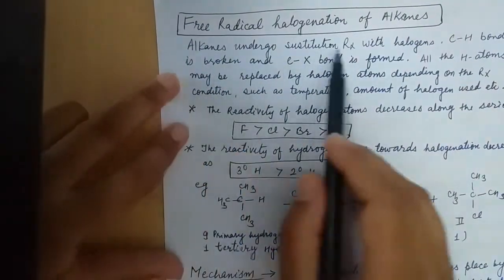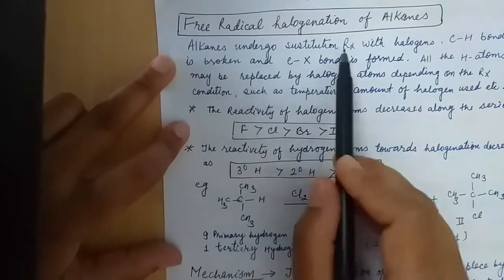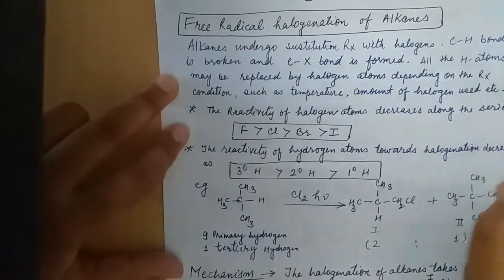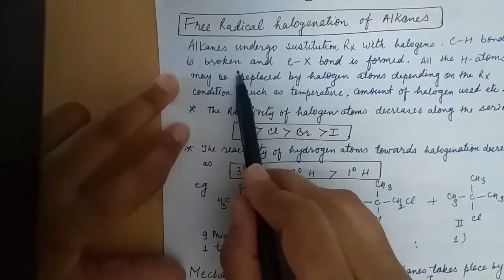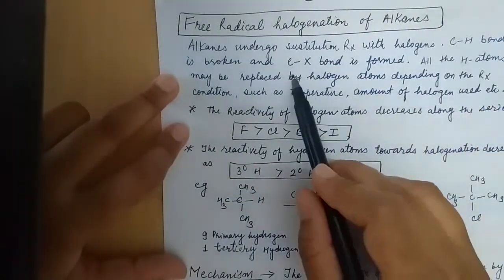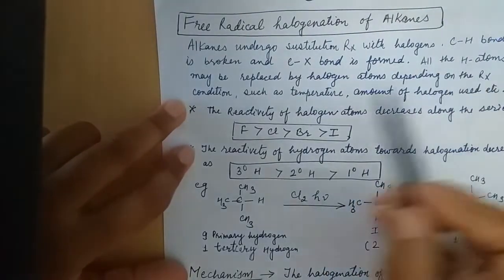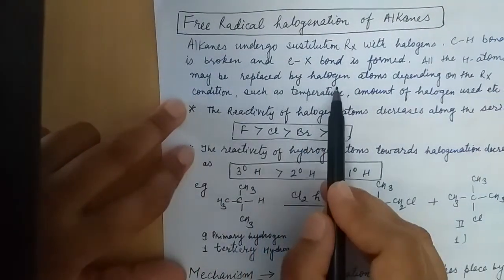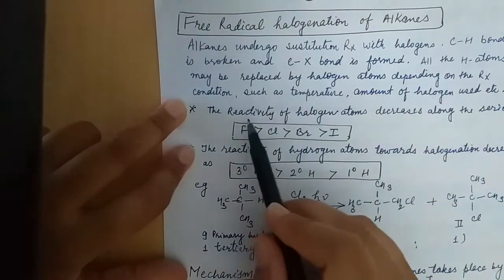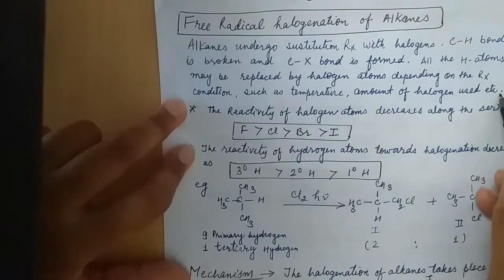Alkanes undergo substitution reactions with halogens. The CH bond is broken and a CX bond is formed with the halogen. All the hydrogen atoms may be replaced by halogen atoms depending on the reaction conditions such as temperature and the amount of halogen used.